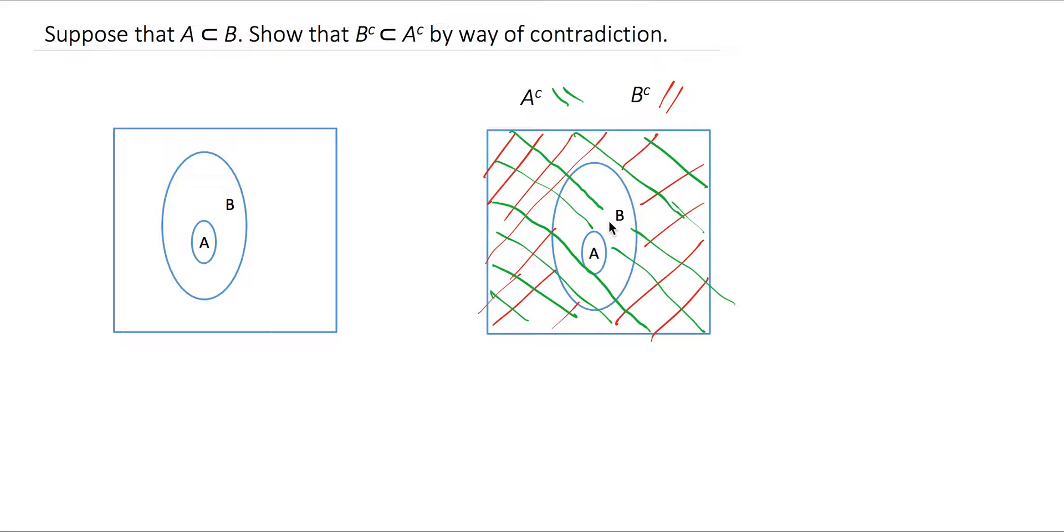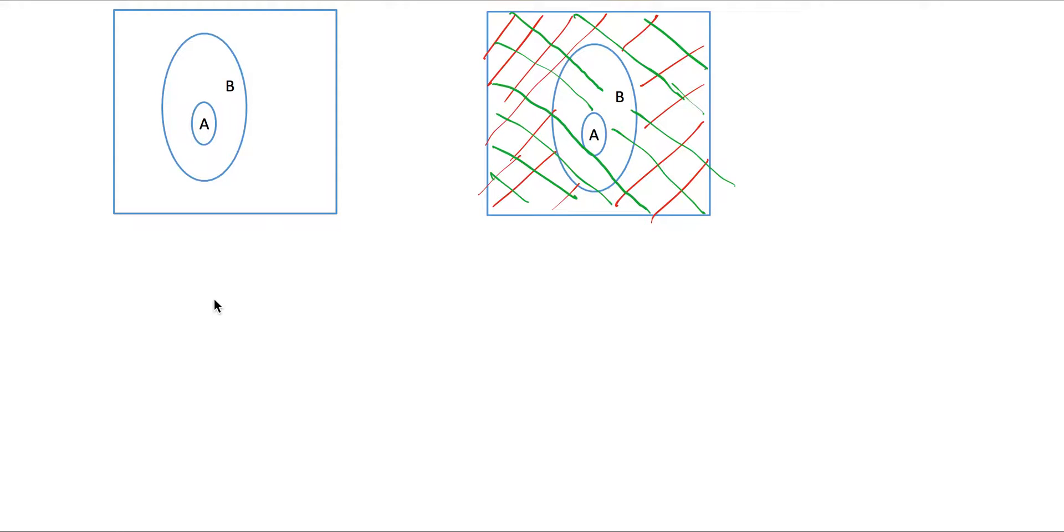So B complement is in fact a subset of A complement. To get to the proof by contradiction, we're given A is a subset of B, show B complement is a subset of A complement. With a contradiction, we want to start with the opposite. So we start here with B complement is not a subset of A complement. This means that there exists an X such that X is an element of B complement, but X is not an element of A complement.